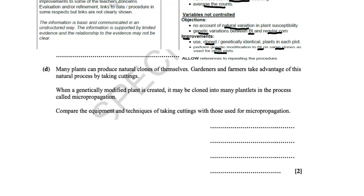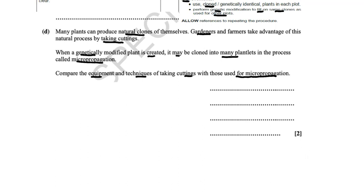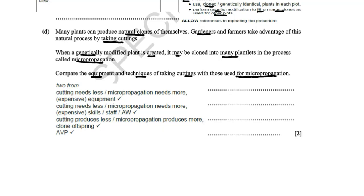Many plants can produce natural clones, and gardeners take advantage of this by taking cuttings. When a GM plant is created, it may be cloned into many plantlets by micropropagation. Compared with taking cuttings, micropropagation requires more equipment and more skilled staff (making it more expensive), but it produces far more cloned offspring than taking cuttings.